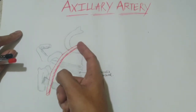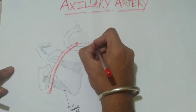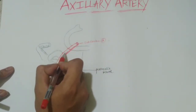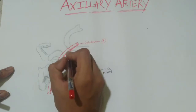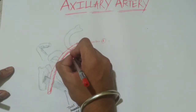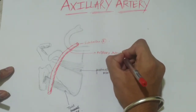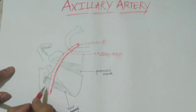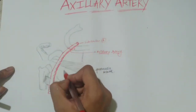The subclavian artery has been discussed regarding its blood supply. The level at which the subclavian artery is converted into the axillary artery is at the external border — or lateral border — of the first rib. From this point, the artery is now called the axillary artery. It begins at the lateral border of the first rib and ends at the inferior border of the teres major muscle.